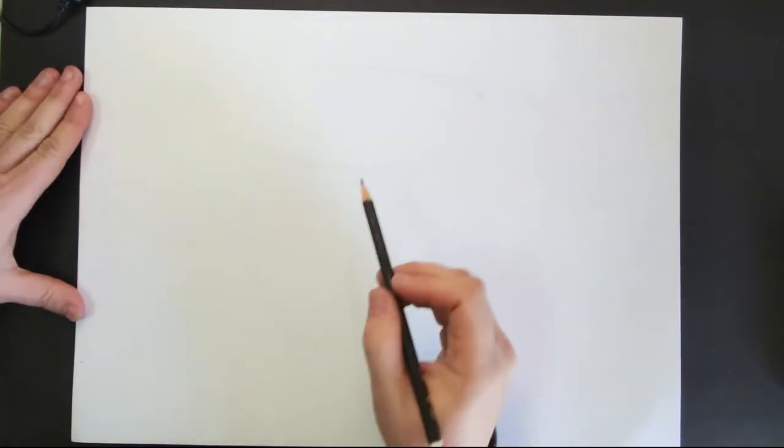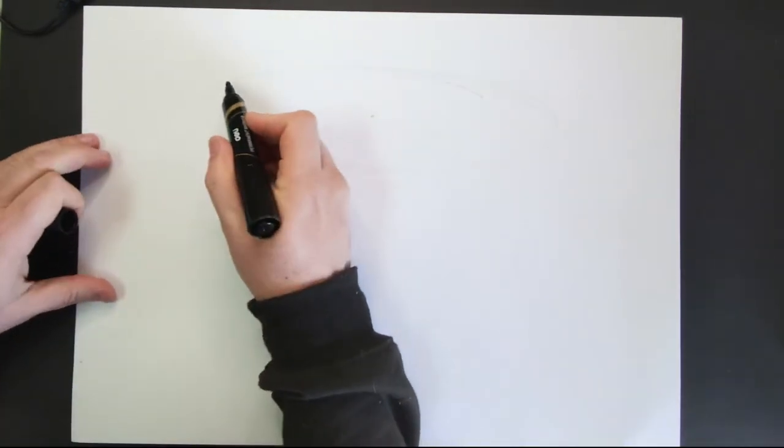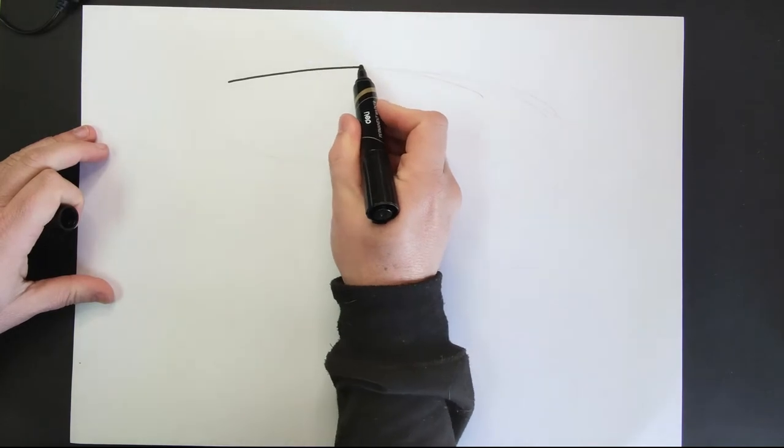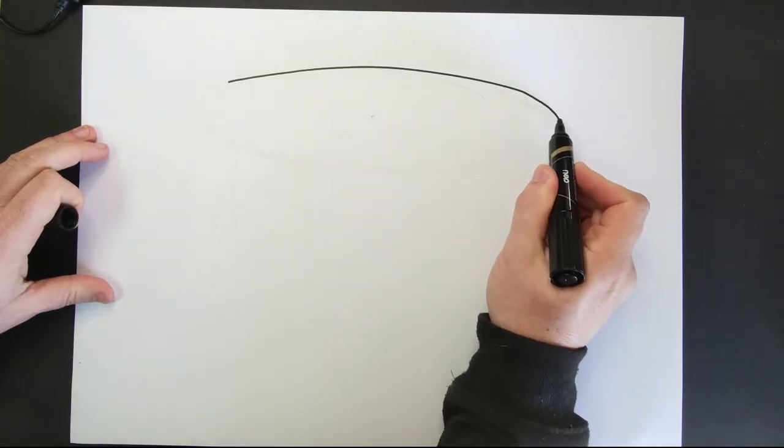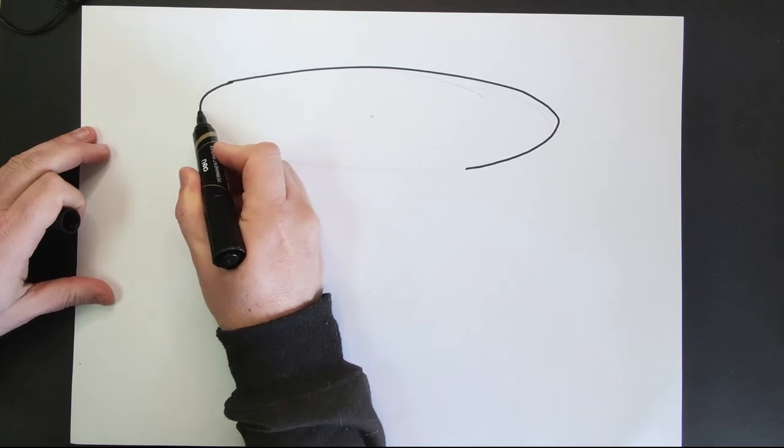To start our cake we're going to draw an ellipse or an oval at the top of our page. Place a dot in the middle of the oval. Now we're going to outline our oval with black pencil or black marker. Do not join the two ends of the oval.